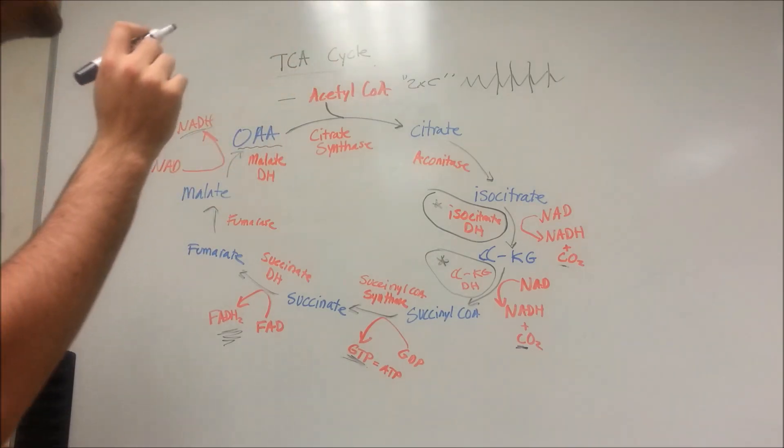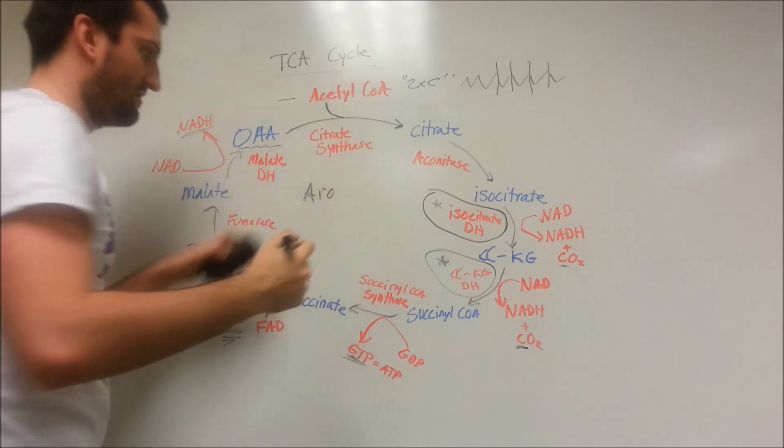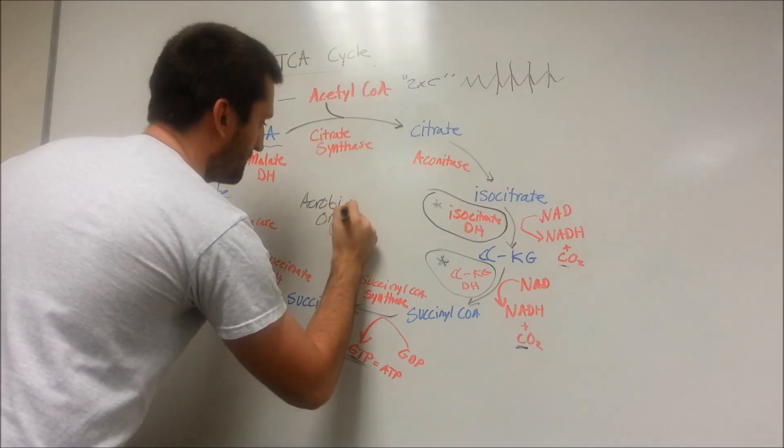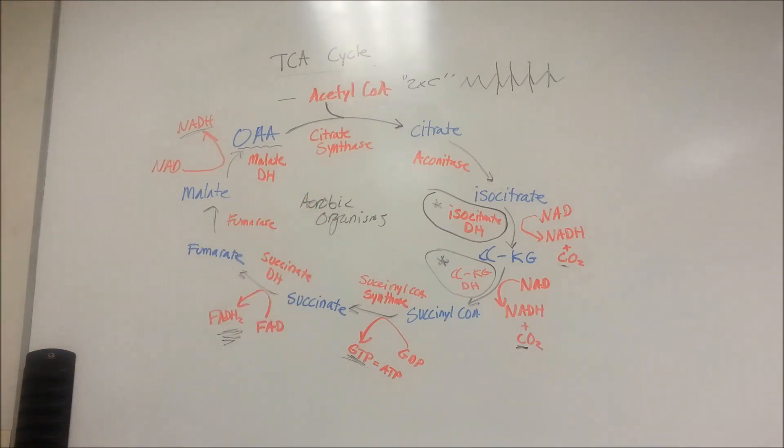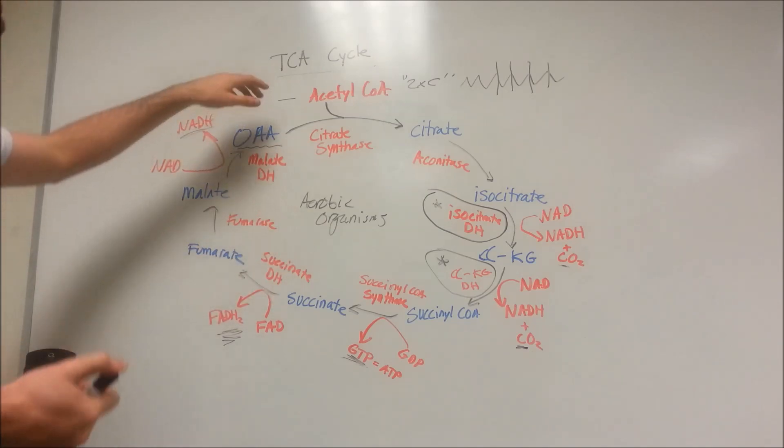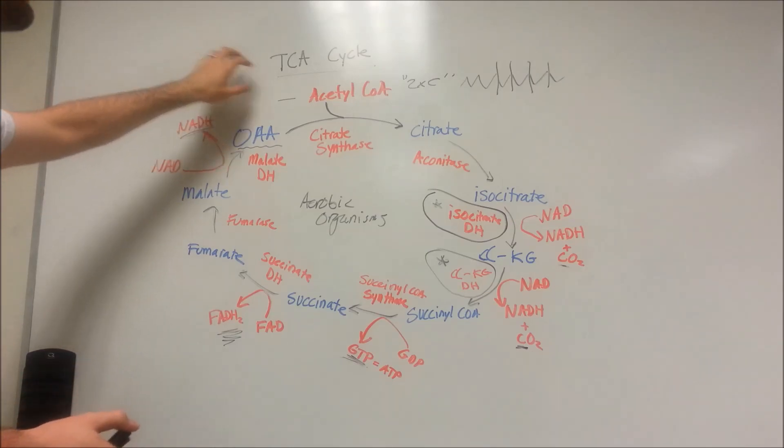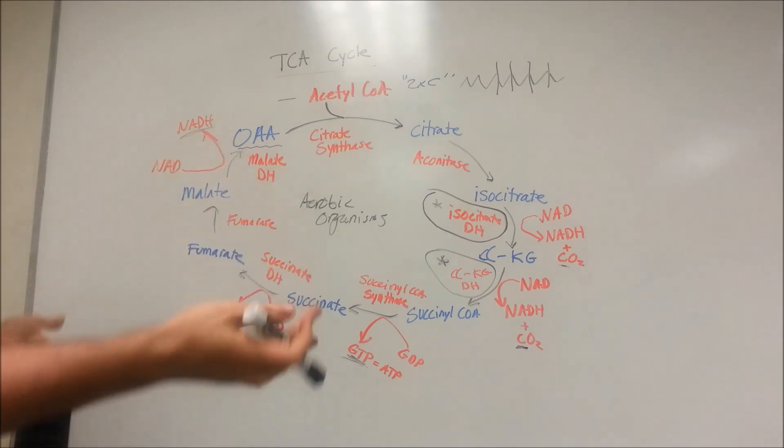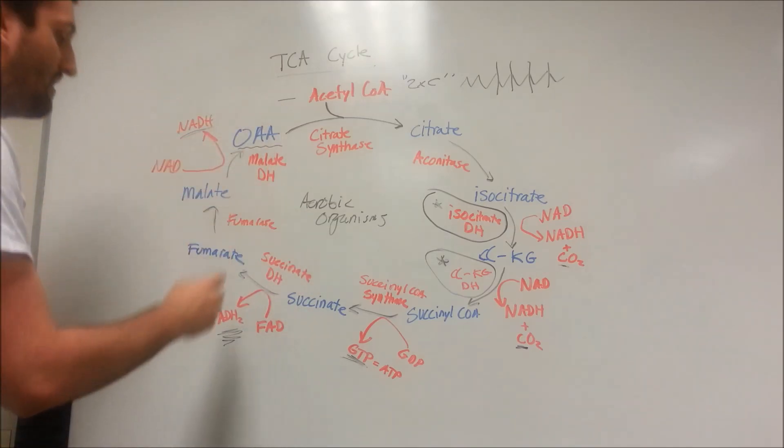The TCA cycle is found in aerobic organisms. Anaerobic organisms don't do this. They take that pyruvate we created in the glycolysis pathway. They don't use the pyruvate dehydrogenase enzyme to create acetyl-CoA. They take that pyruvate, do a much less low yield pathway, and get less energy as a result. This TCA cycle is for aerobic organisms.